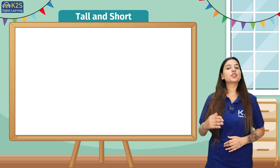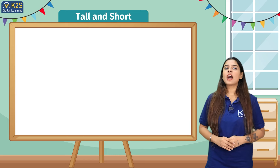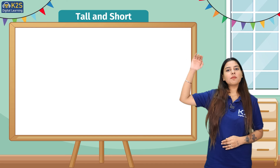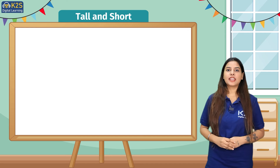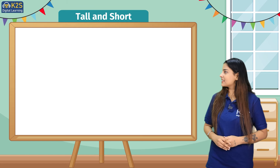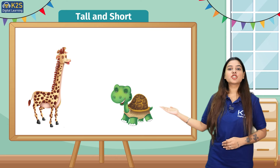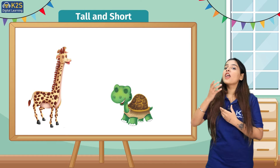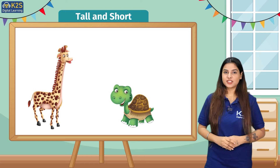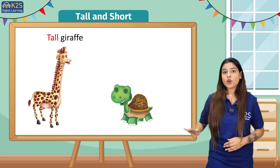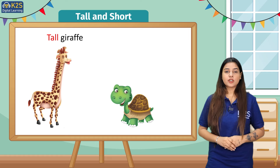The third topic is tall and short. If you have a big brother or sister, they are tall in height compared to you, and your mom and papa are also tall in height compared to you. Long is tall and small is short. One picture is of a giraffe and the other is of a tortoise. A giraffe has a very long neck, that's why a giraffe is tall. A tortoise is very small and walks on the ground, that's why a tortoise is short.